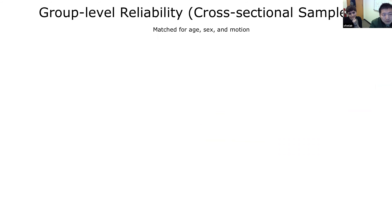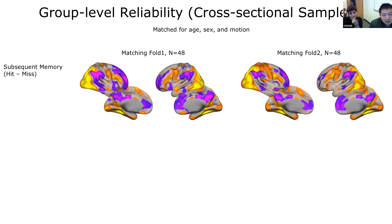Let's look at reliability for the cross-sectional sample. Dividing 96 participants into two groups of 48, matched for age, sex, and motion, we look at the subsequent memory effects — hit minus miss. On a group level, both groups of 48 show a very canonical subsequent memory effect, with activation in inferior frontal, occipital, and parahippocampal gyrus, and memory deactivation in default mode regions. The patterns are very similar between the two folds.